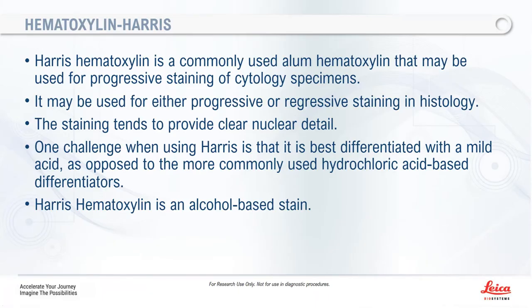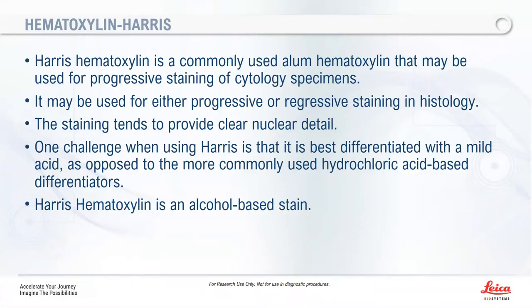Harris hematoxylin is the most commonly used alum hematoxylin and can be used for both progressive and regressive staining, as well as cytology specimens. It tends to provide clearer nuclear detail. It can be best differentiated with a mild acid rather than hydrochloric acid. With HCl, historically you'd do one dip and immediately transfer to water — two seconds could completely decolorize the slide — so mild acids give much more control.